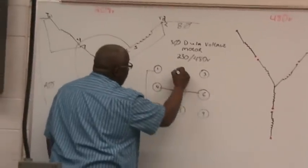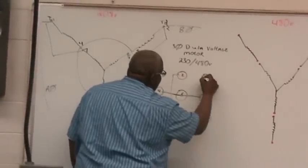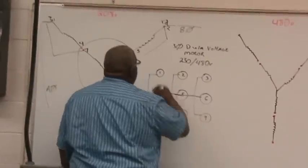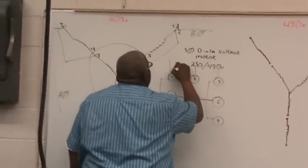One to seven, two to eight, and three to nine. A phase, B phase, and C phase.